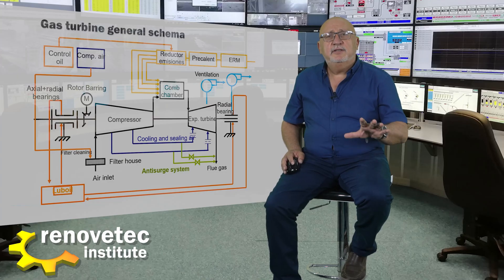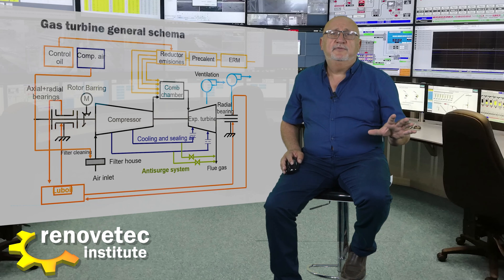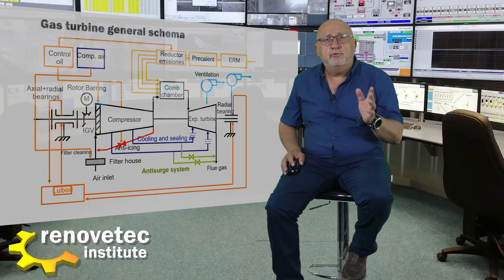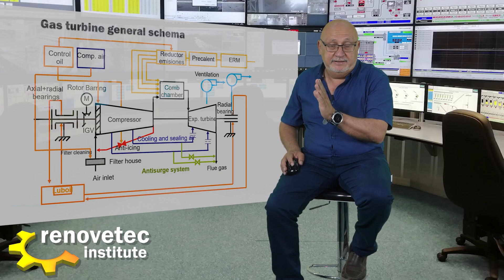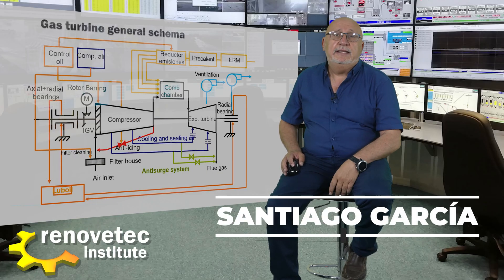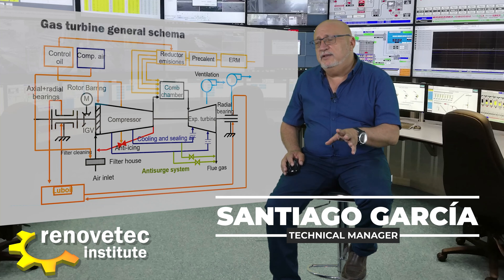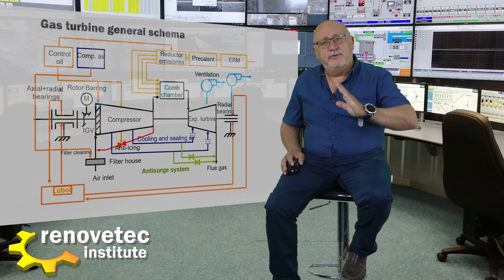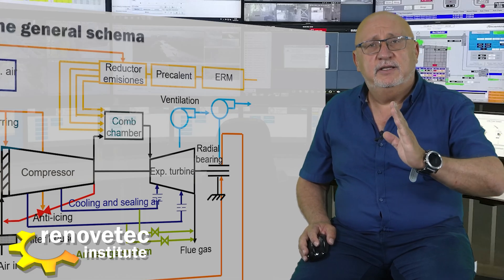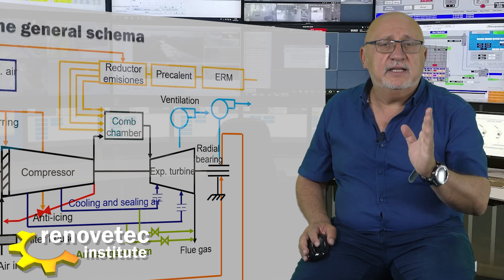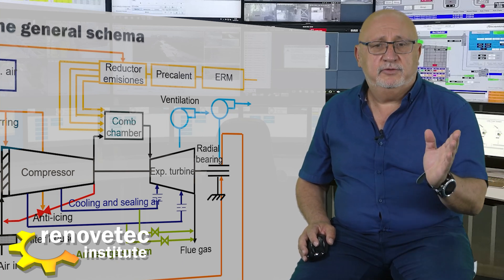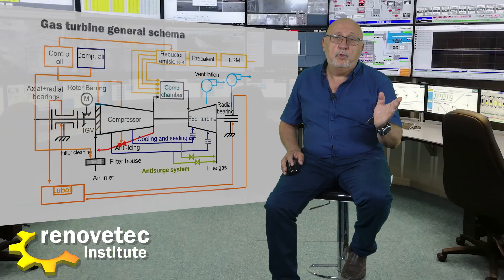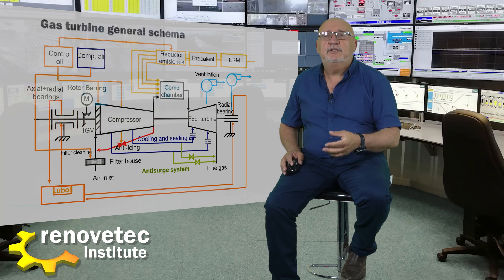The control oil controls the main valve — the valve that introduces the fuel into the turbine — and sometimes also controls the variable inlet guide vanes installed at the inlet of the turbine to control the amount of air entering the turbine.